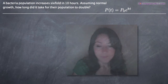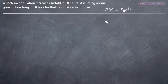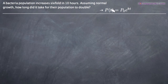The problem we've been given is that a bacteria population increases six-fold in ten hours. So that means it becomes six times the size of its original population in a timespan of ten hours. Assuming normal growth, how long does it take for the population to double? So if it increased six-fold in ten hours, it's going to double in something less than ten hours.